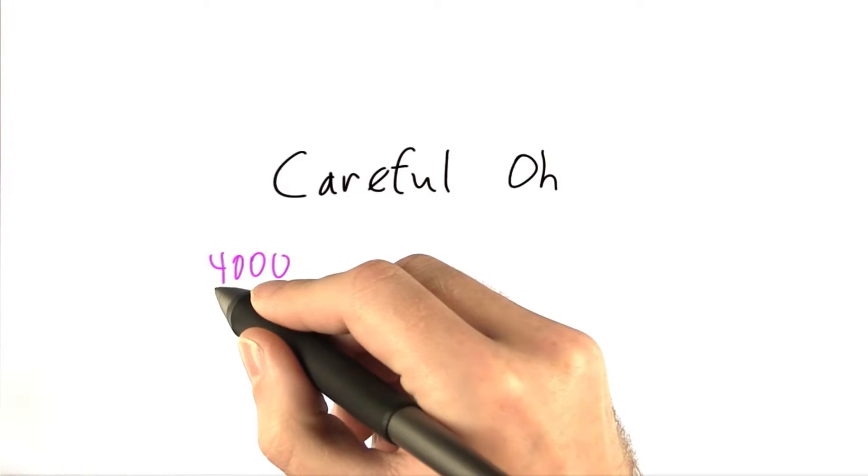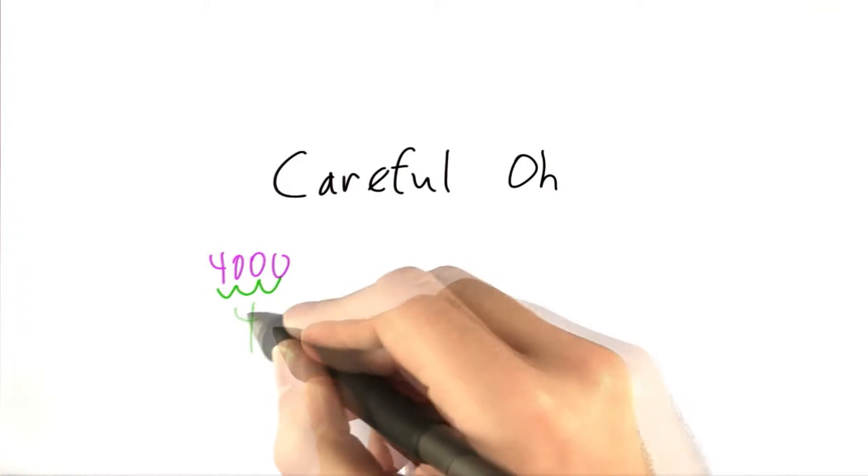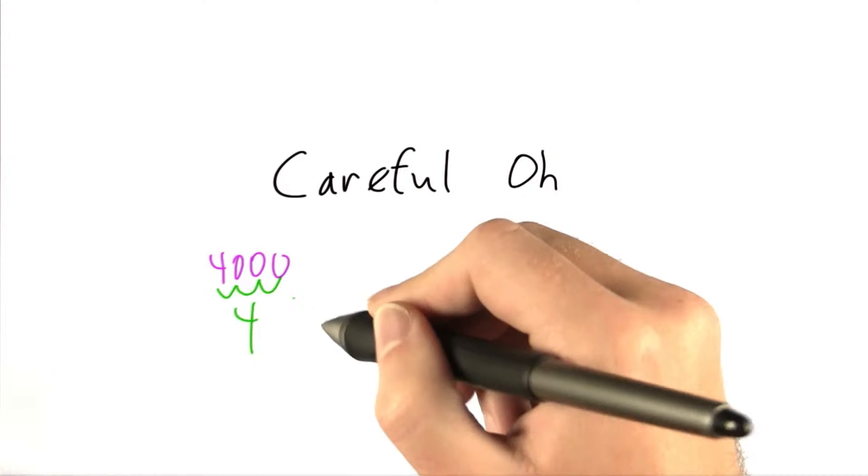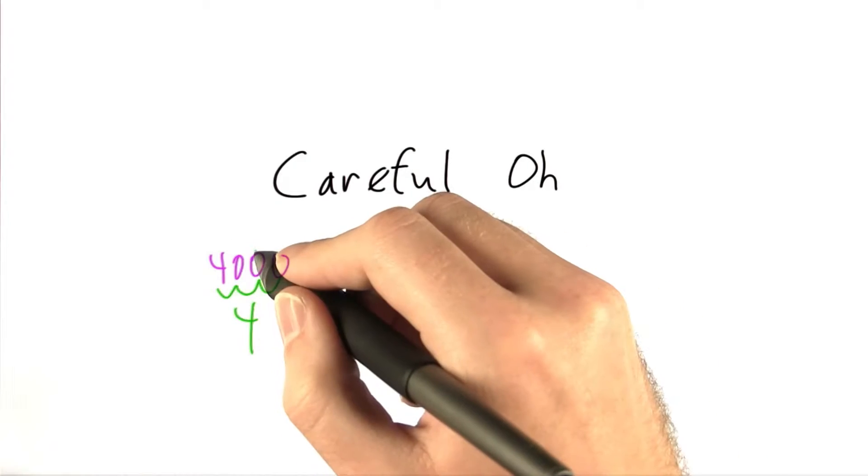But you can write it down with a lot less than 4,000 digits. In fact, you can write it down with 1, 2, 3, 4 digits. So it's actually a logarithmic number of digits in relation to the size of the number.